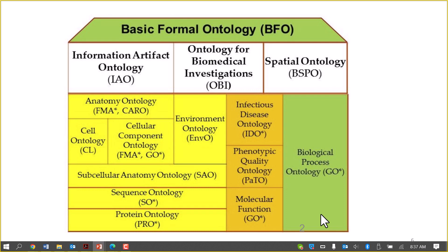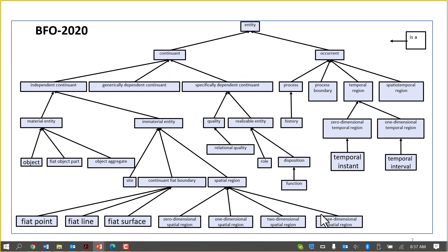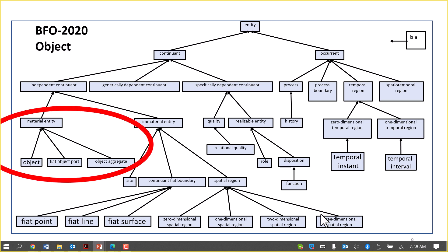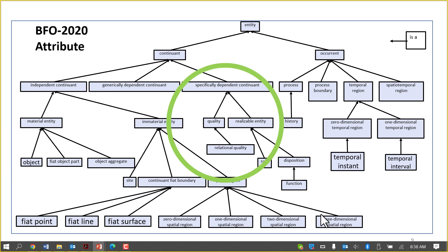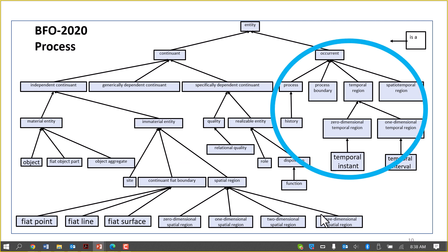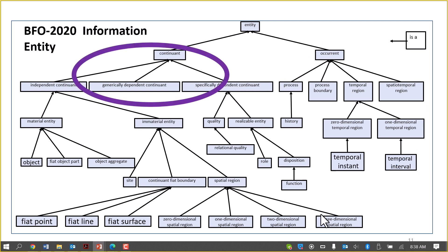This is the picture as it looks with BFO at the top, the Ontology for Biomedical Investigations in the middle, and then all of the various domain-specific biomedical ontologies at the bottom. This is BFO 2020, the latest version of BFO, created in connection with the ISO standards process. These are the material entity terms in BFO, the attribute terms, the process terms, and the information entity terms in BFO.